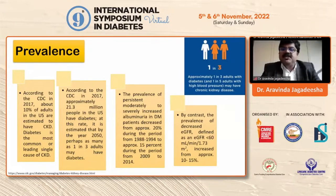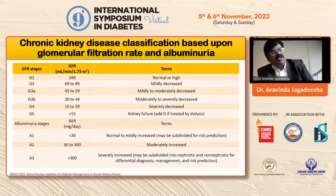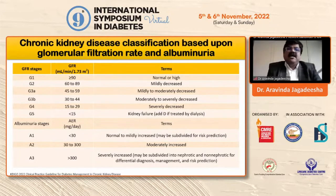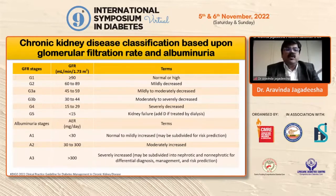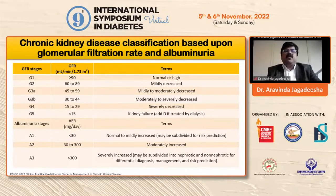By contrast, the prevalence of decreased eGFR — defined as eGFR less than 60 — increased from approximately 10% to 15%. CKD is classified based upon GFR and albuminuria. Depending upon GFR, it is staged as G1, G2, G3A, G3B, G4, and G5, from normal to severe kidney failure. Based on albumin excretion, it is classified as A1, A2, A3 — that is less than 30, 30 to 300, and more than 300 mg of albuminuria.